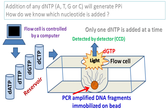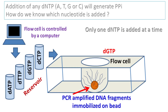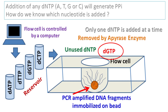If a dNTP is not incorporated, no light is detected. Hence, the sequence information of the DNA can be easily obtained by detecting the light. It should be noted that there can be unused dNTP in the flow cell, and this unused dNTP is removed by the enzyme apyrase.